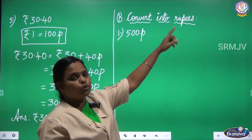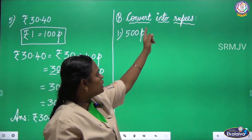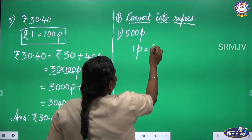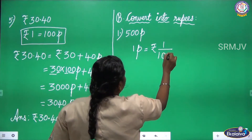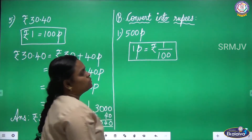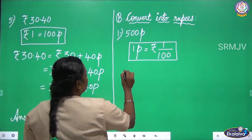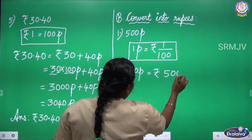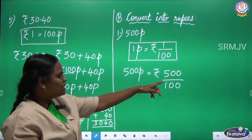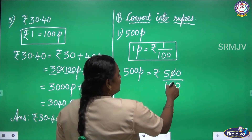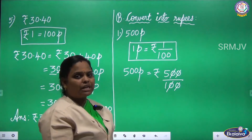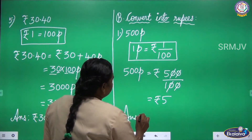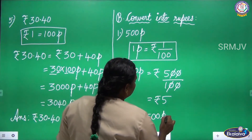Next we are going to convert into rupees — they are given in paise. How will you convert paise into rupees? 1 paise equal to rupees 1 by 100. So we divide by 100. 500 paise equal to rupees 500 by 100. Here 2 zeros in numerator and denominator cancel, so 5 by 1 is 5. The answer is 500 paise equal to 5 rupees.